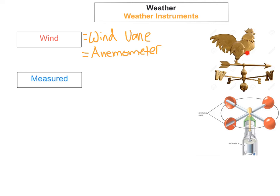You can see here I've got the wind vane and the anemometer. Whatever way the wind is coming from, the wind vane will spin around and show you the direction. With the anemometer, it catches the wind in little cups, these cups spin around, and this generates the wind speed in the generator. Wind speed can be expressed in knots or in kilometres per hour.